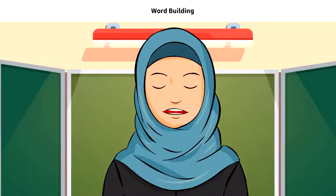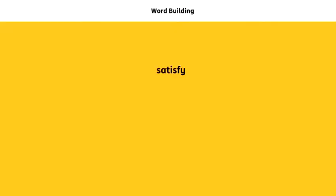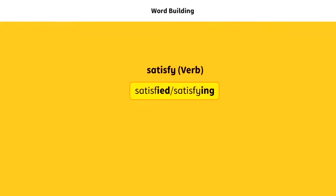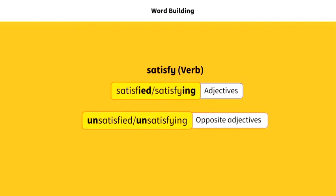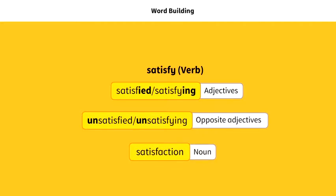Let us see an example. The word 'satisfy' is a verb. By adding suffixes, we form the words 'satisfied' and 'satisfying', both of which are adjectives. By adding a prefix to them, we form two other words, 'unsatisfied' and 'unsatisfying', which are opposite adjectives. Another word that can be formed is 'satisfaction'. Satisfaction is a noun.